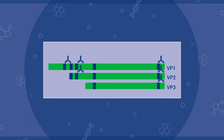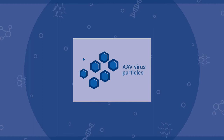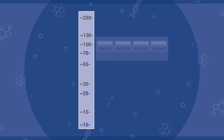Capsid protein antibodies are used to analyze the expression levels of VP1, VP2, and VP3, which is crucial information to optimize yield and potency of the capsid production. Tom also uses them to prove the presence and identity of these proteins along the production and purification processes.